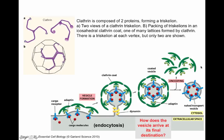This is an example in which the structure of the molecule is directly related to its function. Clathrin forms a structure called a triskelion, which is formed of two different proteins — a light chain and a heavy chain of clathrin. Notice also that the structure is not flat; it is actually bent and curved. When triskelions spontaneously pack together, they form an icosahedral structure that becomes the clathrin cage.